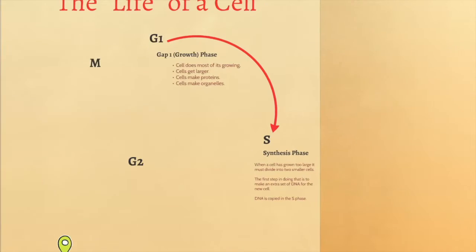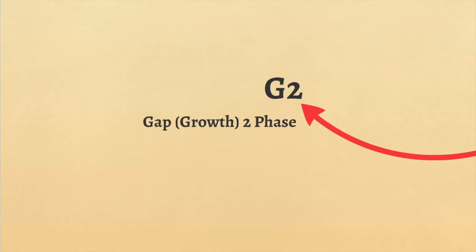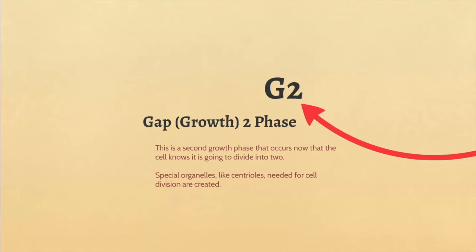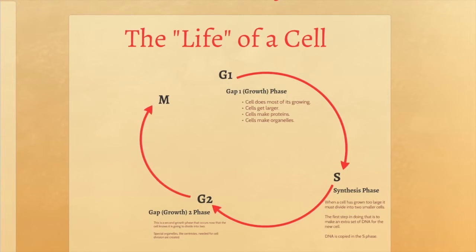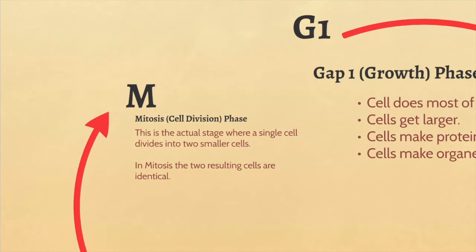Once a copy of DNA is made, the cell goes into the G2 phase — the second growth or gap phase — where the cell produces everything it will need to go through division. It makes special organelles called centrioles and other things needed to divide. It's basically the cell's last chance to prepare before it splits into two cells. Then it goes into the M phase, which stands for mitosis — the fancy scientific word for cell division — and this is the actual stage where a single cell splits into two smaller cells.